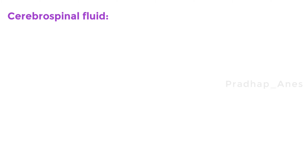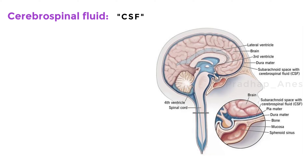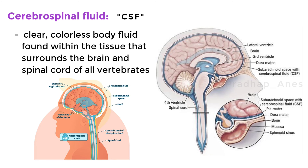Cerebrospinal fluid, or CSF, surrounds the spinal cord, which is also shielded by three protective layers called the meninges: dura, arachnoid, and pia mater. CSF is a clear, colorless body fluid found within the tissue that surrounds the brain and spinal cord of all vertebrates. CSF occupies the subarachnoid space between the arachnoid mater and the pia mater, and the ventricular system around and inside the brain and spinal cord.